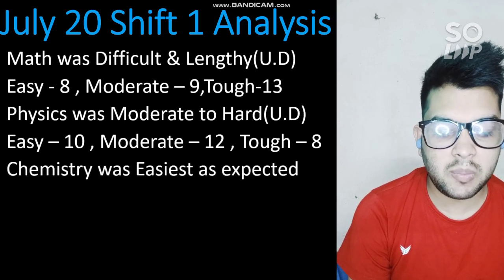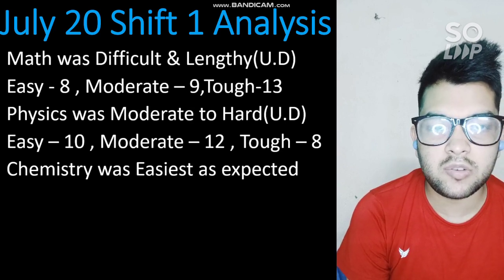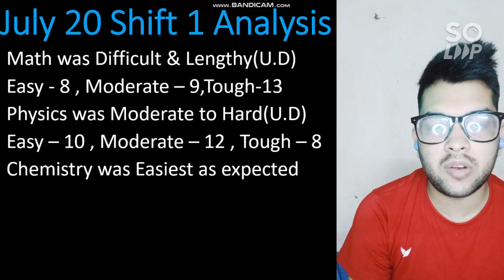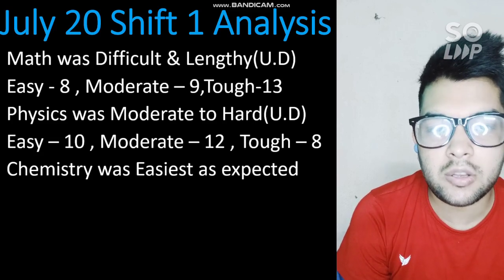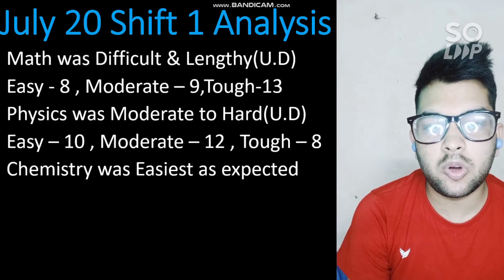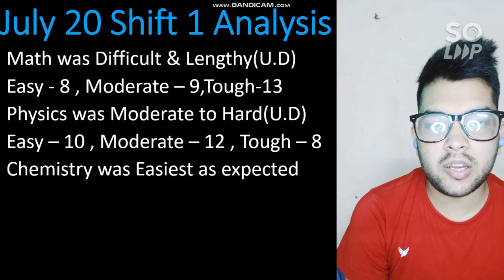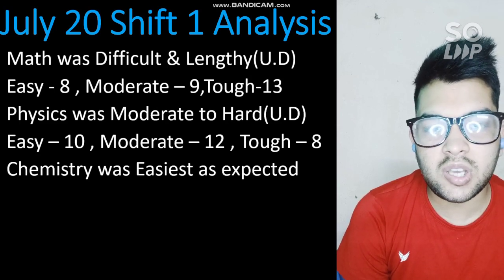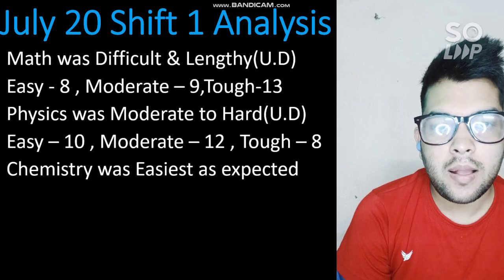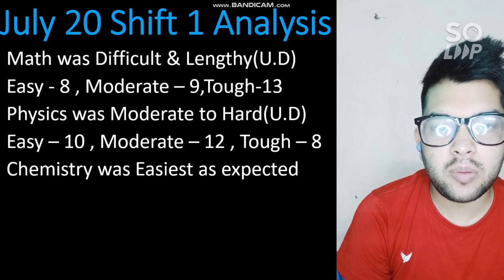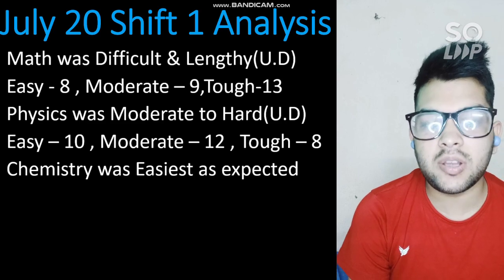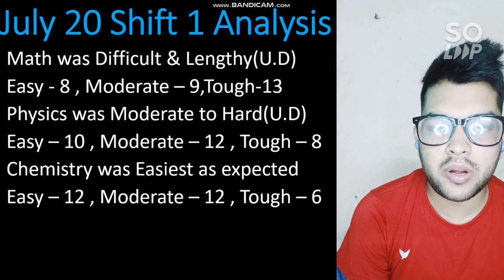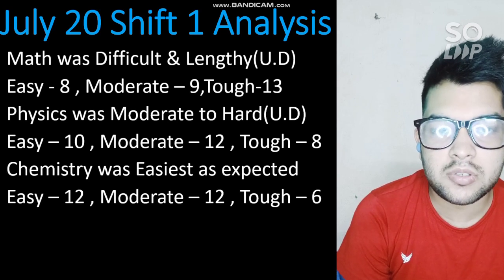Chemistry was the easiest subject as expected. It was more theory-based and not uniformly distributed — more questions came from organic and inorganic chemistry, with notably more from S-block and P-block. For easy chapters, go for the last two chapters of Chemistry from Class 11 and 12, and also S-block and P-block, which you can study from the NCERT book itself. There were 12 easy, 12 moderate, and 6 tough questions in Chemistry.